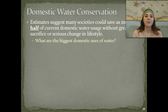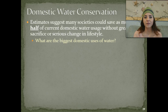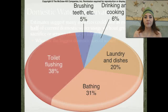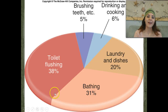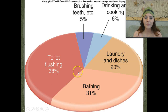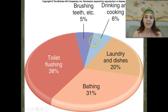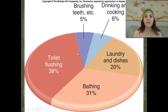So domestic water conservation — estimates suggest that most societies could save as much as half of their current domestic water usage without making any serious changes in their lifestyles. The biggest domestic uses of water include toilet flushing, bathing, and laundry and dishes. The water we use for drinking, cooking, or brushing teeth is relatively small — it only comprises about 11% of our water usage, with everything else comprising the rest.